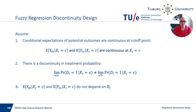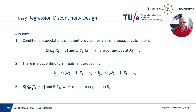The fuzzy RDD requires three assumptions. First, the conditional expectations of the potential outcomes are continuous at the cutoff — same as before. Second, there is a jump in the treatment probability at the cutoff, though not necessarily from 0 to 1. Third, and new here: the expectation of y0i given xi equals c should not depend on di. This is a local homogeneity assumption — all people with xi close to c have treatment assignment that is essentially as good as random. This is needed to rule out local selection into treatment.